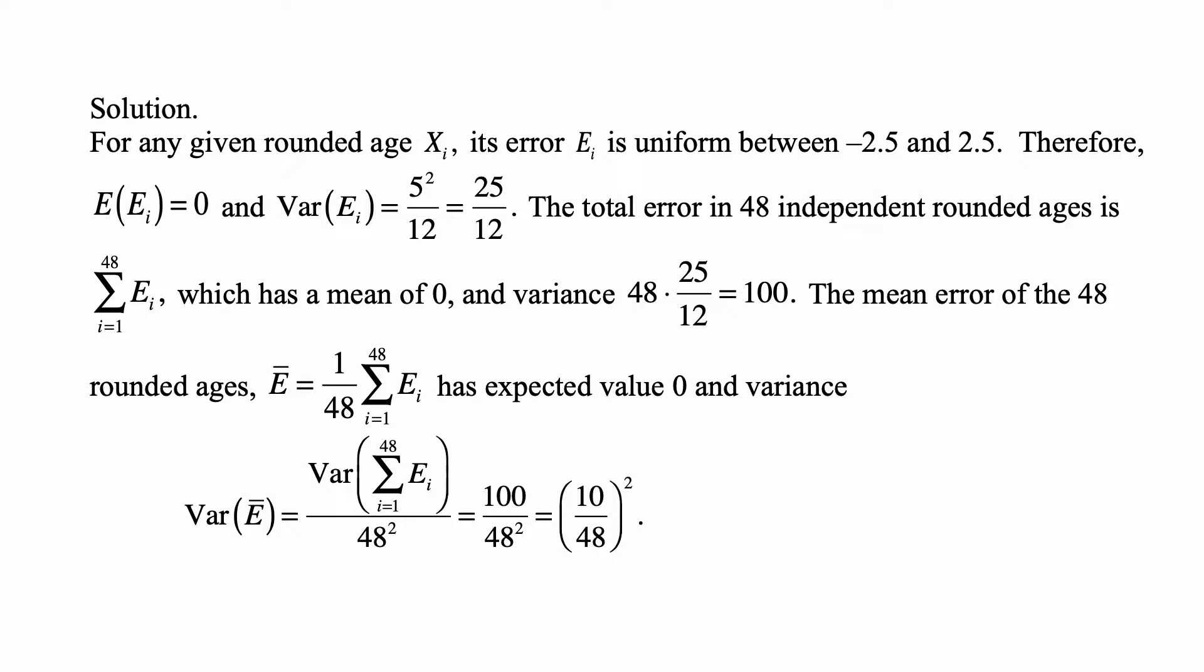Whenever you have uniform distribution on an interval from A to B, the mean is the midpoint, so (A+B)/2, and the variance is (B-A) squared divided by 12. That's exactly what we're using here.